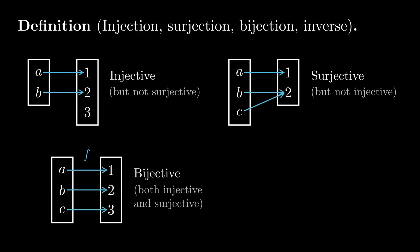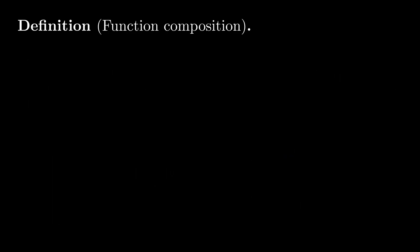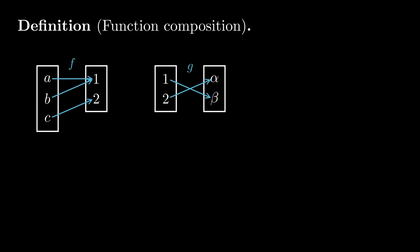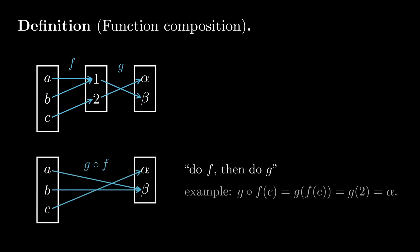Given a bijection f from x to y, flipping all of the arrows in the diagram gives us a bijection from y to x called the inverse of f. Finally, the composition of two functions is just the result of applying one, then the other, from right to left.